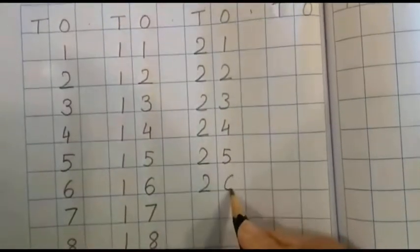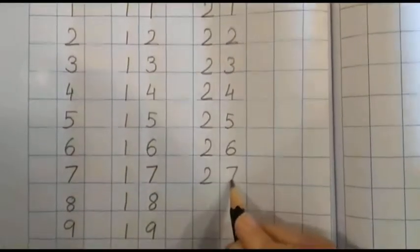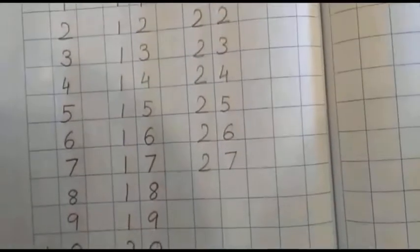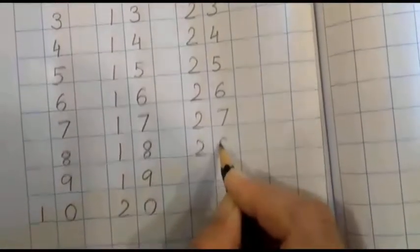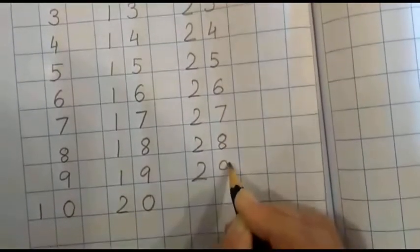Two six twenty six, two seven twenty seven, two eight twenty eight, two nine twenty nine.